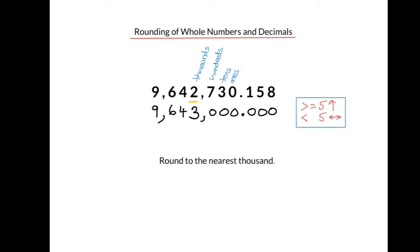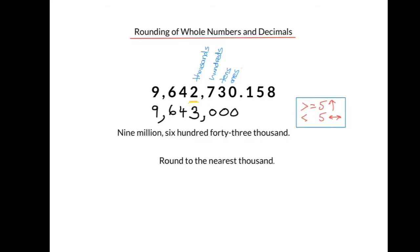Because there are only zeros to the right of the decimal place with no digits greater than 0, we can remove those zeros because they don't change the value of the number. However, the zeros to the left of the decimal are essential to make sure that the other digits are in the correct place and have the correct value. So our number rounded to the nearest thousand is 9,643,000.